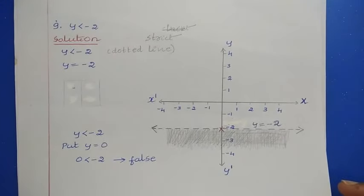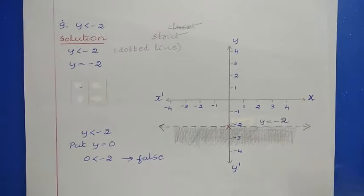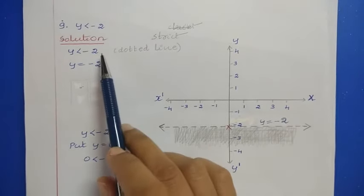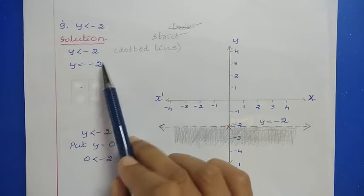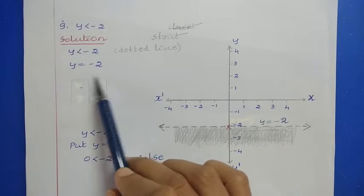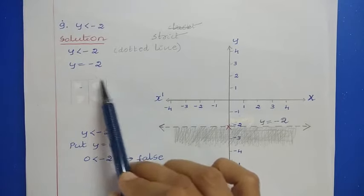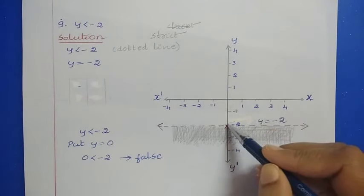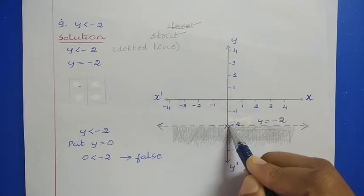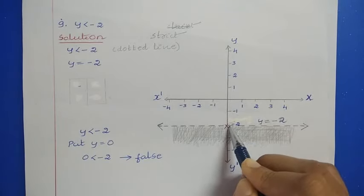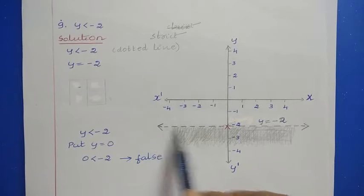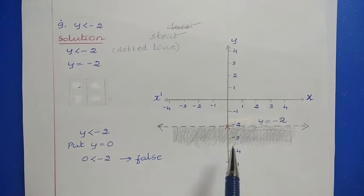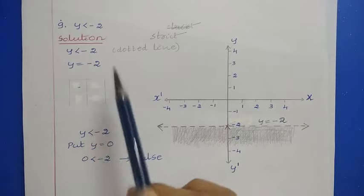Question number 9: y < -2. Convert to equality: y = -2. Here we can directly draw the line without finding additional solutions. y = -2 means for all values of x, y is always -2, so we draw a line parallel to the x-axis.